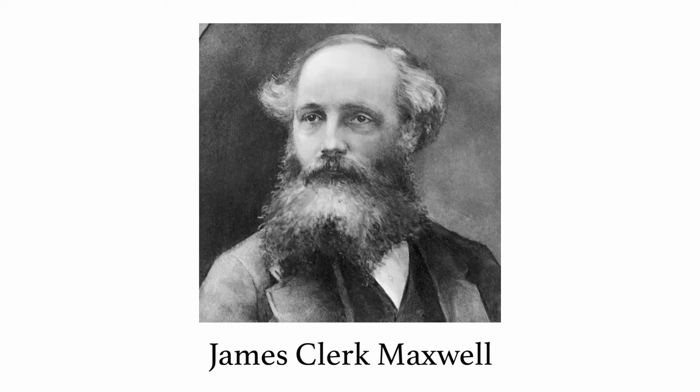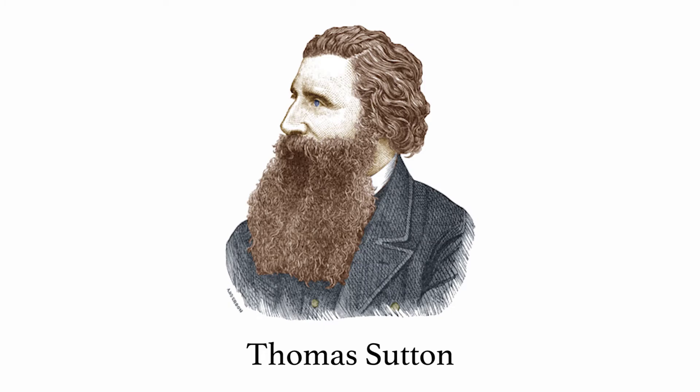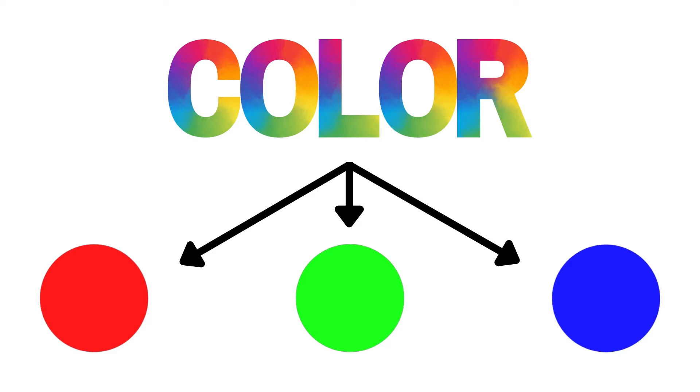In 1855, Scottish physicist James Clerk Maxwell proposed that all colors are merely combinations of varying intensities of red, green, and blue. Six years later in 1861, Thomas Sutton followed Maxwell's theory and created the first color image by taking three black and white photos of a tartan ribbon — one with a red filter, one with a green filter, and one with a blue filter. These were developed into positive images and projected on a screen with their corresponding filters. So Sutton isolated the three primary color regions and then combined them to create varying colors.